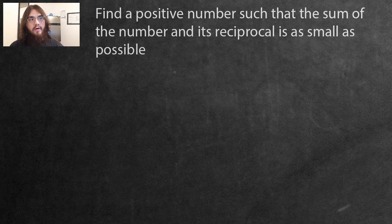Hello there. In this video, we're going to be solving the following optimization problem. Find a positive number such that the sum of the number and its reciprocal is as small as possible.